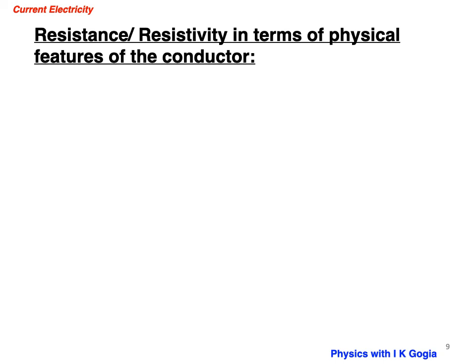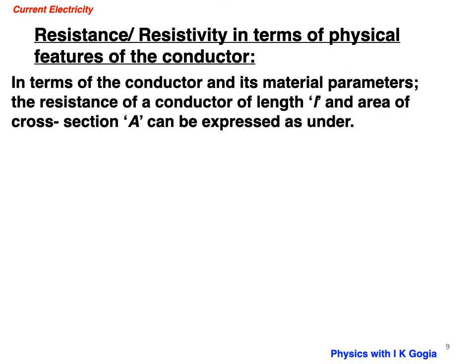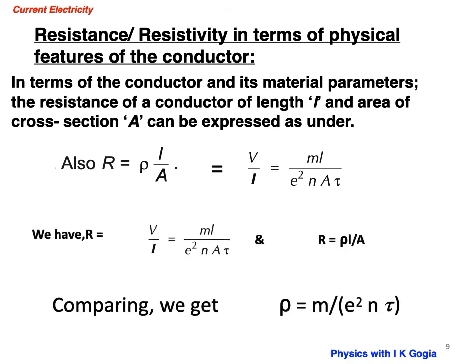Let us now express the resistance and resistivity in terms of physical parameters of a conductor, in terms of conductor and material parameters. You can write R is equal to rho L over A. Also R is V over I or ML over E square N A tau. If you compare these two expressions, you can delete L by A from both sides. That will give you rho equal to M over E square N tau.